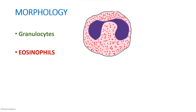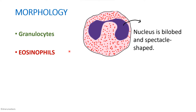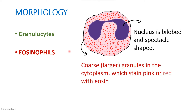Eosinophils have a bilobed nucleus that is usually spectacle-shaped. The cytoplasm is plentiful and pink in color with coarse orange-red granules. Compared to neutrophils, the granules of eosinophils are more coarse and orange-red in color — that is a major differentiating feature of eosinophils.